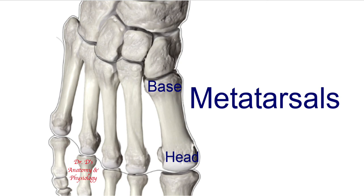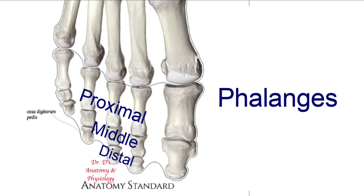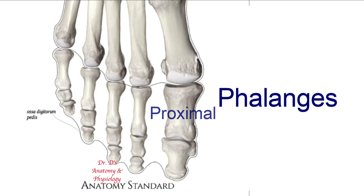Finally, there are 14 phalangeal bones in the toes. Each toe has three phalangeal bones: a proximal, middle, and distal phalangeal bone. The big toe, or hallux as it is called in Latin, has only a proximal and distal phalangeal bone. This is just like what is seen in the hand with the phalangeal bones of the fingers.